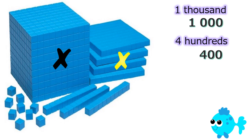Let's continue to take a look at our base 10 blocks. Look at this green X — which of the base 10 blocks does it represent? If you said it represents the 10s, you are correct. How many groups of 10s do you see? There are 3 groups of 10s. Can you tell the value of 3 groups of 10s? You are correct.